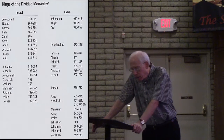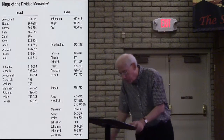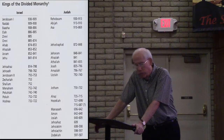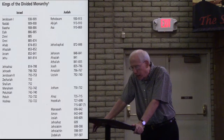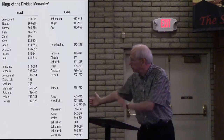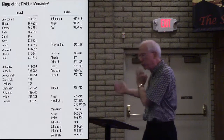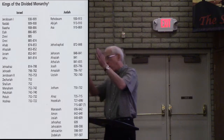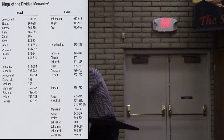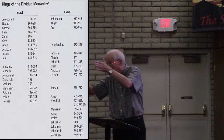Uzziah — also known as Azariah — reigned in Judah for 52 years. It appears, as noted, that he shared the first 24 years as co-regent with his father Amaziah, and the last 11 years of his reign as co-regent with his son Jotham. So there's a lengthy co-regency at the beginning, a lengthy one at the end, and a gap in the middle where he was sole ruler.